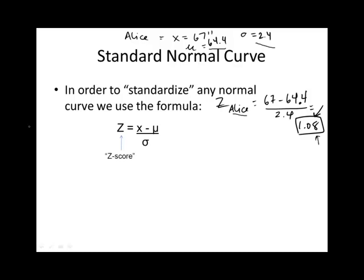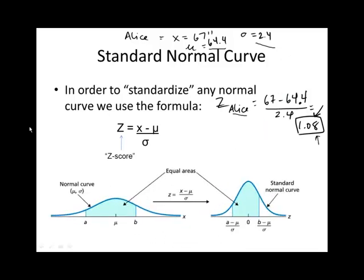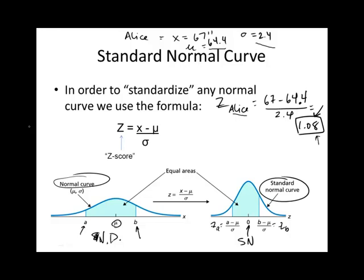We call this a z-score. On the standard normal curve the mean is 0, and for the regular normal distribution we have values a and b whose z-scores respectively would be z_a = (a − μ) / σ and z_b = (b − μ) / σ. Essentially what we're doing is taking the normal curve and turning it into the standard normal curve by normalizing the values using that formula.